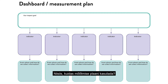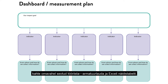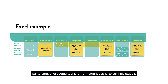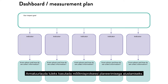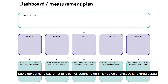So how should you work with the measurement plan? You can start by using two interconnected tools: a dashboard and an Excel example. The dashboard should be used to get started on planning the measurement process. It helps you to see a bigger picture and prioritize indicators and research methods.